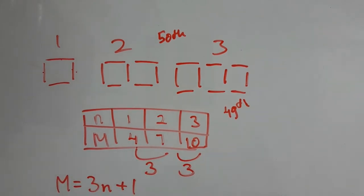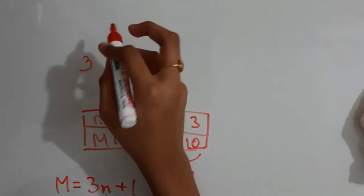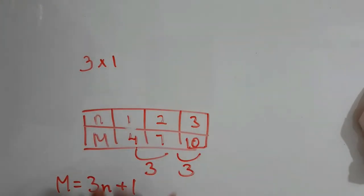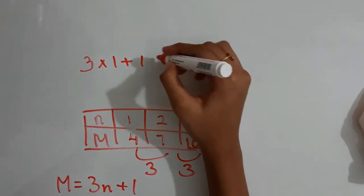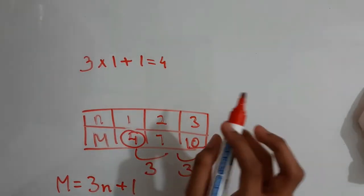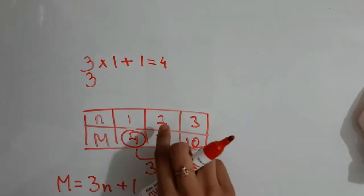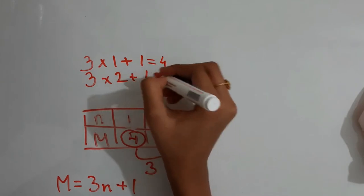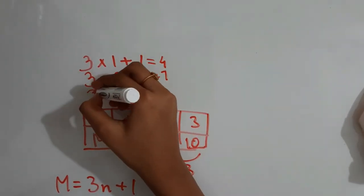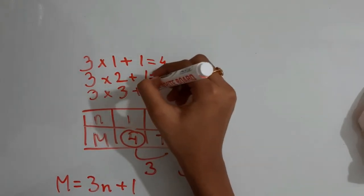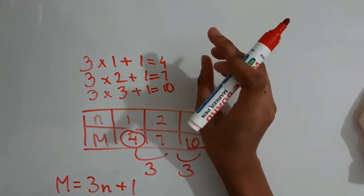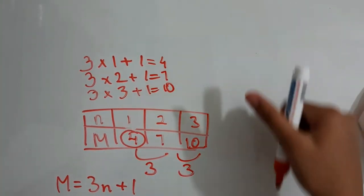Let's check the formula. For n = 1: 3 × 1 + 1 = 3 + 1 = 4. We got the first figure's matchsticks. For n = 2: 3 × 2 + 1 = 6 + 1 = 7. For n = 3: 3 × 3 + 1 = 9 + 1 = 10. We got all three correctly, so we have confidence the formula works for bigger numbers too.